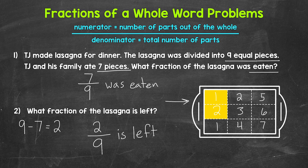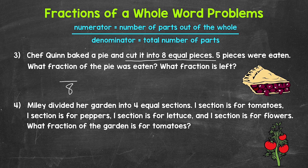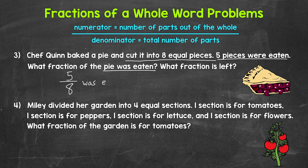Let's move on to numbers three and four. In number three, Chef Quinn baked a pie and cut it into eight equal pieces. Five pieces were eaten. What fraction of the pie was eaten, and what fraction is left? Let's start with what fraction of the pie was eaten. The denominator is the total number of pieces the pie was cut into — that's eight. So eight is our denominator. Now we need the numerator: five pieces were eaten, so five is our numerator. Five eighths of the pie was eaten.